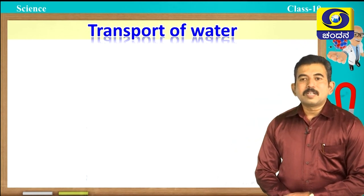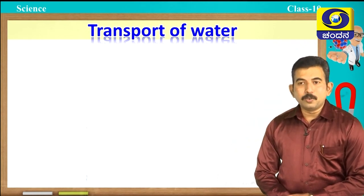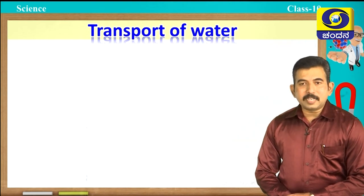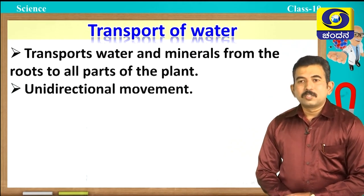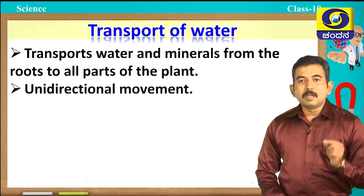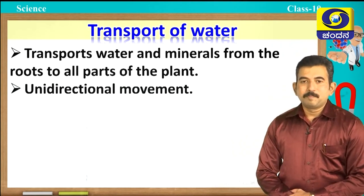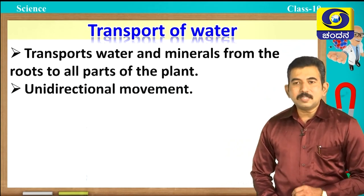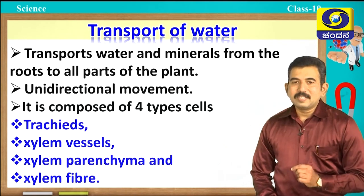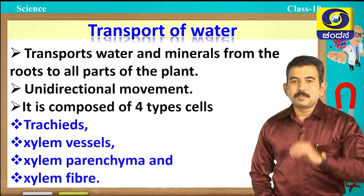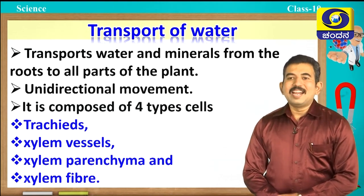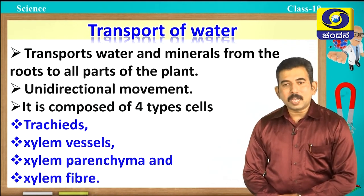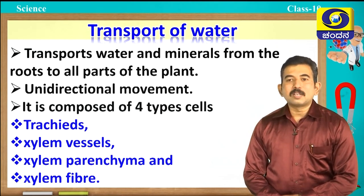Now let us discuss transport of water in plants. Xylem is the main conducting tissue which plays a very important role in transportation of water and minerals. In xylem tissue, the movement of water is unidirectional. Xylem is composed of mainly four types of cells: tracheids, xylem vessels, xylem parenchyma, and xylem fiber. Out of these four, only xylem parenchyma is living; the remaining three are non-living.